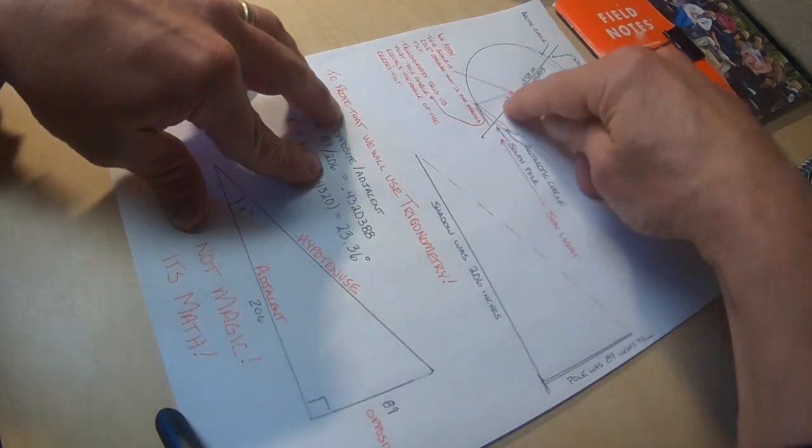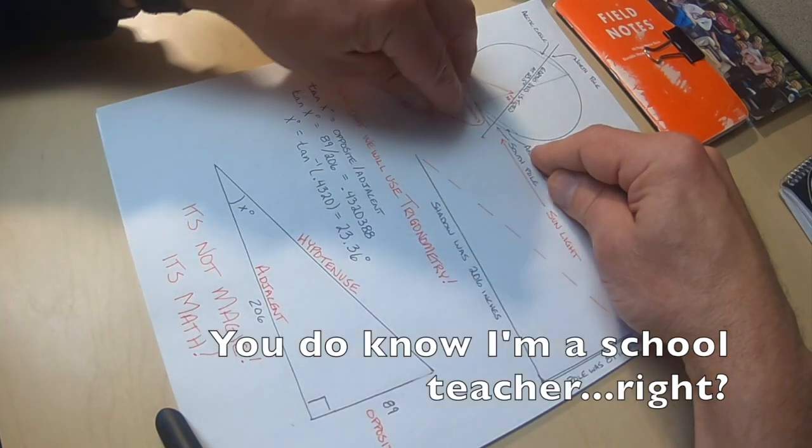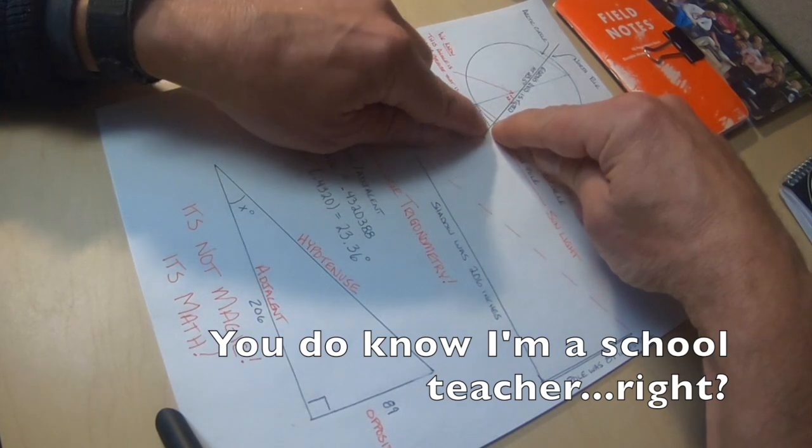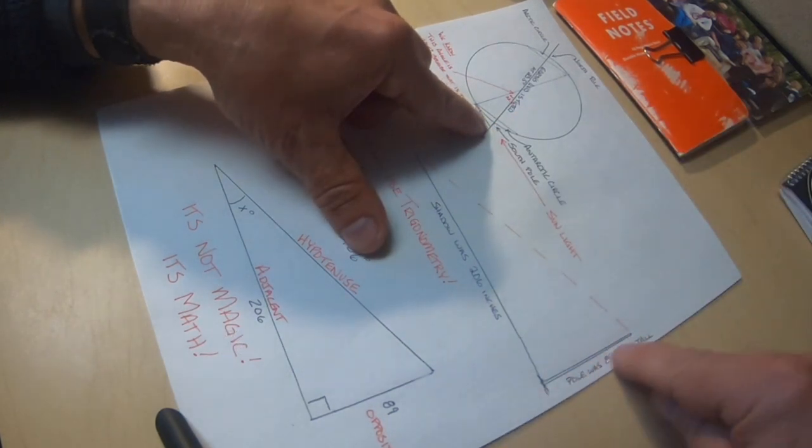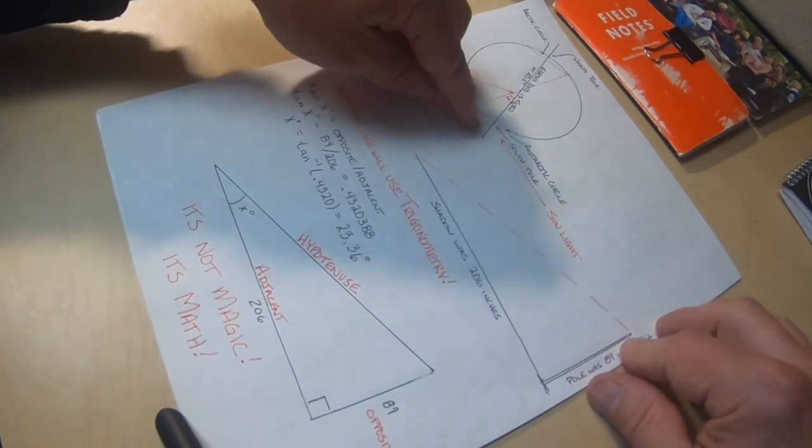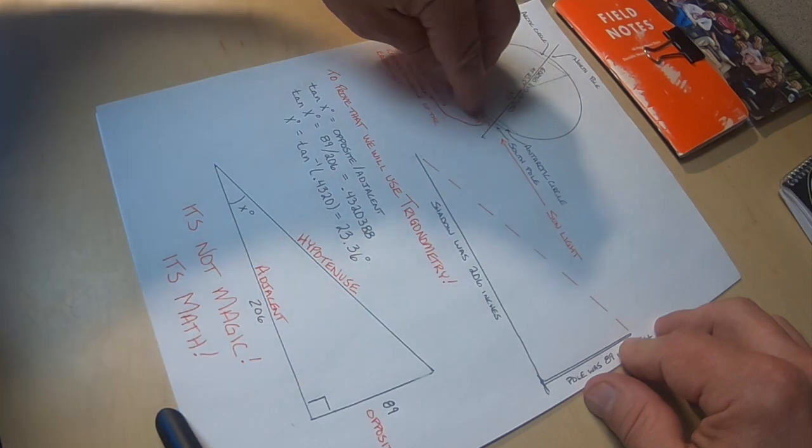So this is the earth's tilt, the axis. I am on that spot right there, the exact geographic South Pole. If I stick my pole in the snow right there like I did, that makes the pole—when I measured it, it was 89 inches and the shadow was 206.